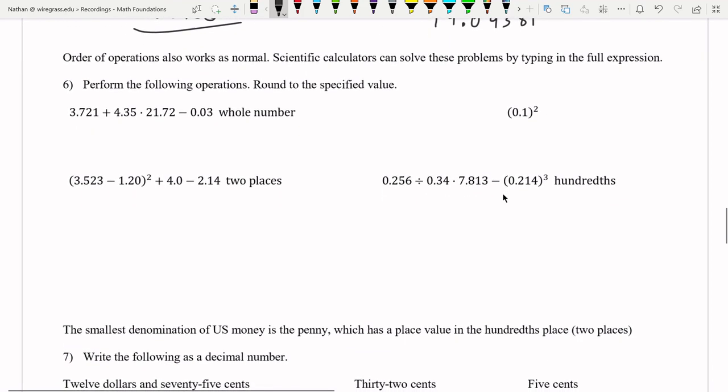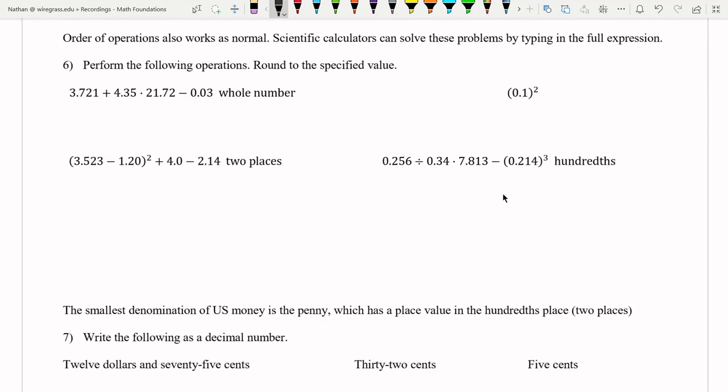So order of operations still works the same way. You're still going to use PEMDAS or GEMA as I've shown before. But the nice thing about calculators is that as long as the calculator is a scientific one, then you actually don't need to do anything here. You can just type the whole thing, the whole expression into the calculator and then solve it. Typically you're going to have to round. So keep that in mind. So for this one, the first step we need to do is multiply these two values together.